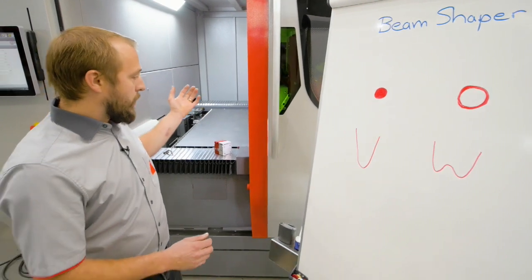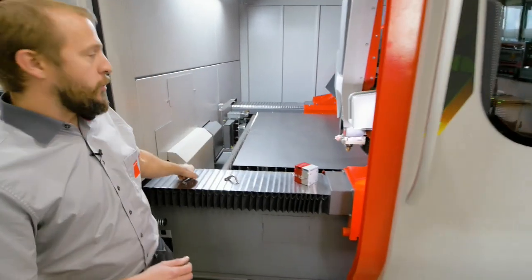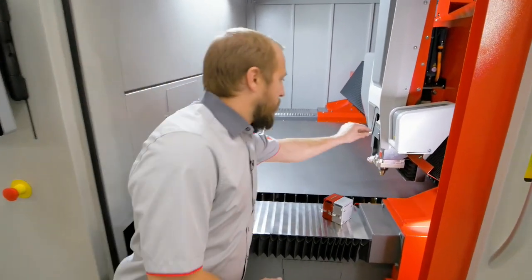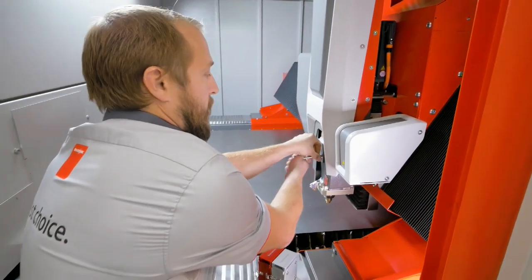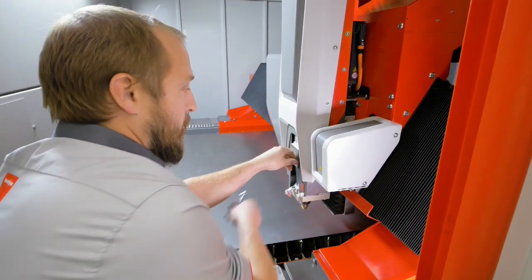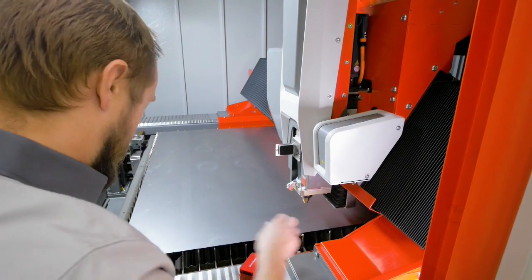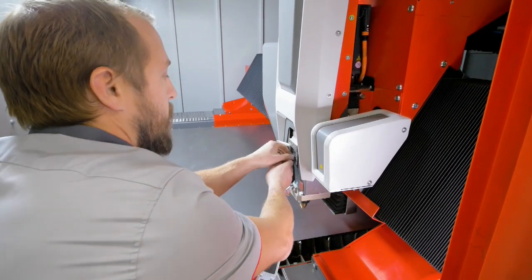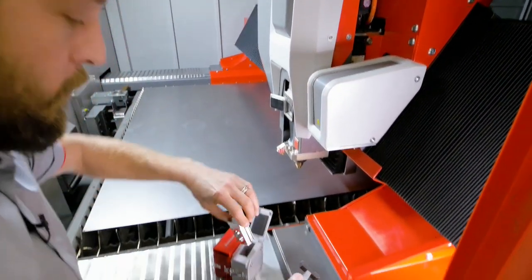So let's have a look inside the machine. We're going to replace our protective glass and add a protective glass with a beam shaper. It's quite easy and fast to do.